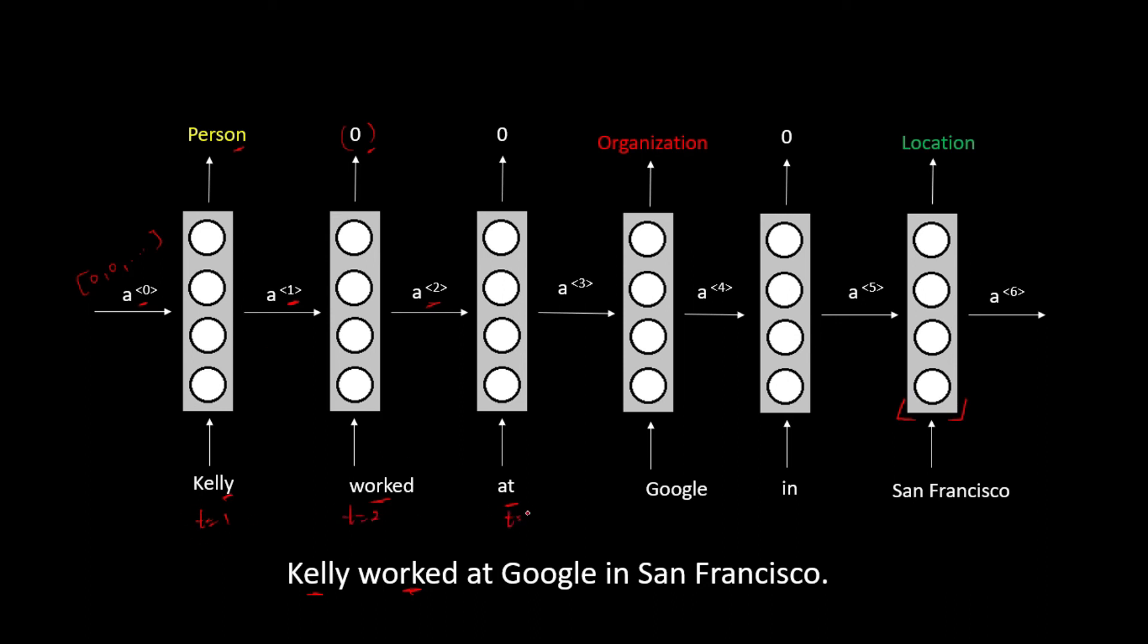This is time equal to two, time equal to three and so on. And for every word, it is giving an output, whether it is an entity or not.